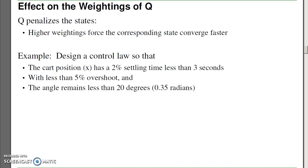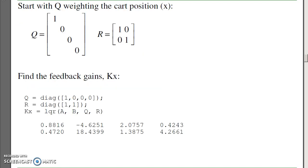For example, suppose I want to design a control law for the cart and pendulum. I want the cart to have 2% settling time less than 3 seconds, less than 5% overshoot, and keep the angle within 20 degrees, 0.35 radians. To do that using LQR methods, I'd use the following procedure. First, start with R equal to 1,1. I've got two inputs. I don't really care which one I use. So in this case, let R be 1,1. I'll weight the position with the output, x, and see what I get.